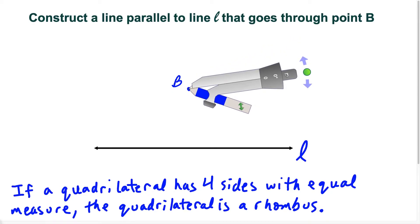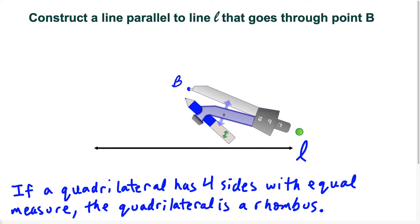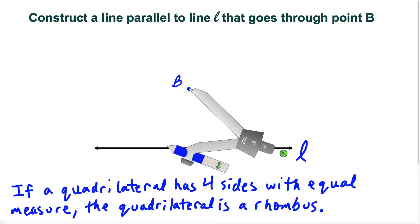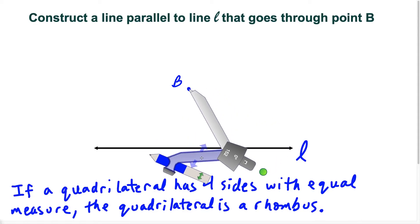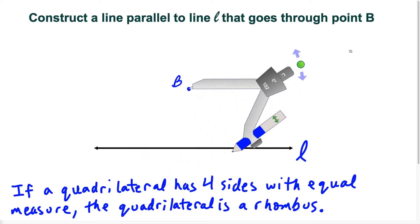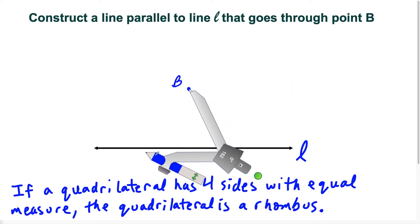and opposite sides of a parallelogram are parallel. So what I want to do is I'm going to extend the compass in such a way that I know that it's going to hit this line L at two locations. So you can imagine here, if I swing it like this, it's going to hit line L in two locations.